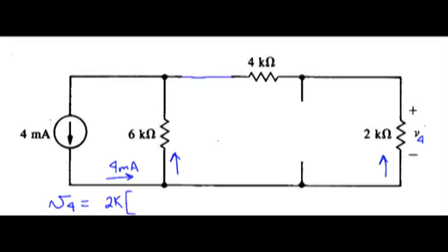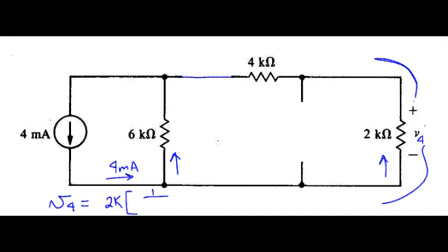Current divider expression looks like the conductance of the path of interest, so that's over here, and that would be 1 over the series resistance, and then we divide by the total parallel conductance.